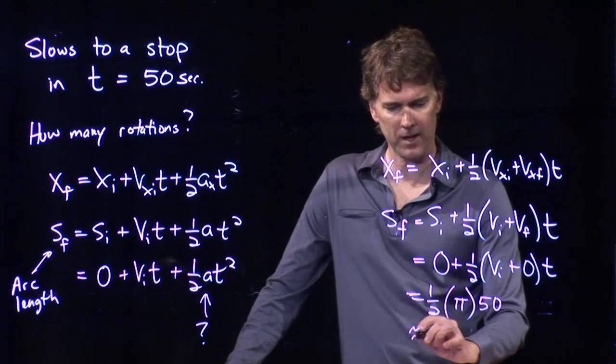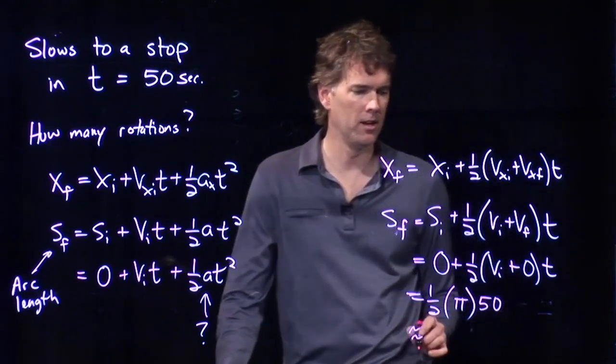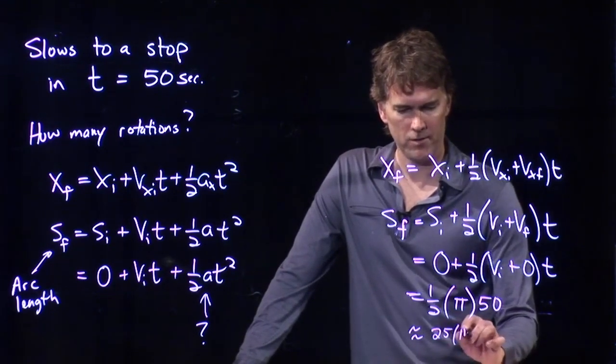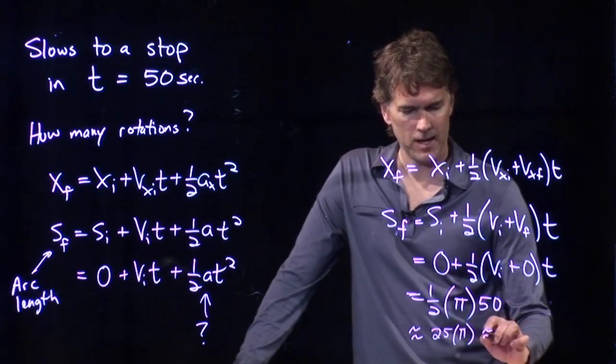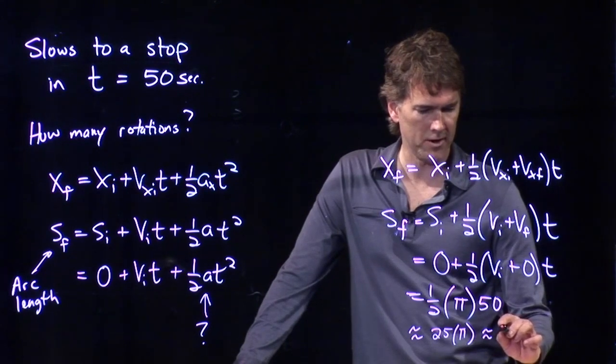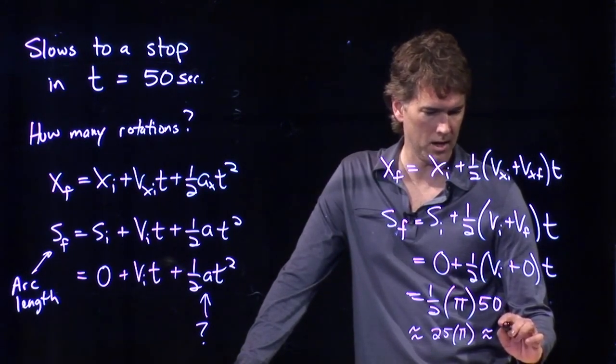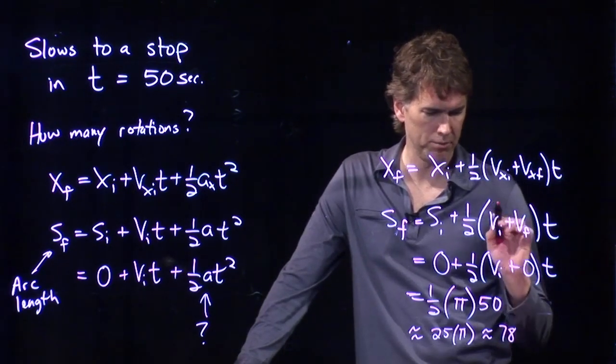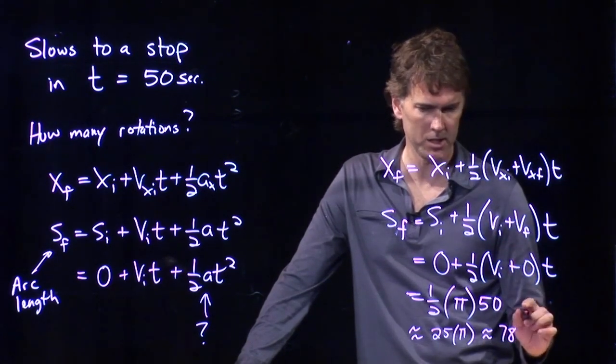Okay, so, one-half times pi times 50. Well, what's that? Half of 50 is 25. 25 times pi, that's a little bit more than 75. We'll say, maybe 78. Somebody punch that into your calculator and tell me what you get. And this is in units of meters.